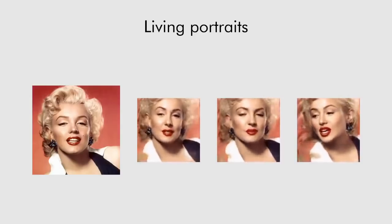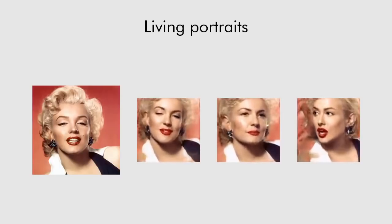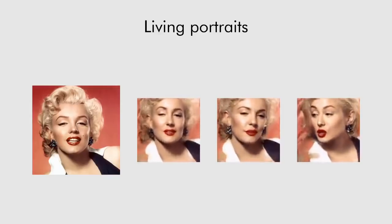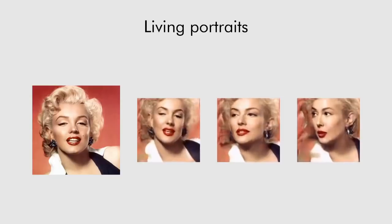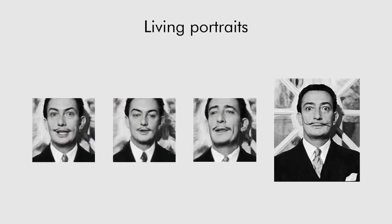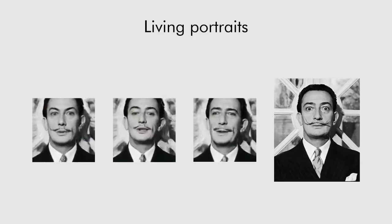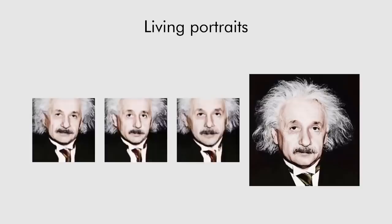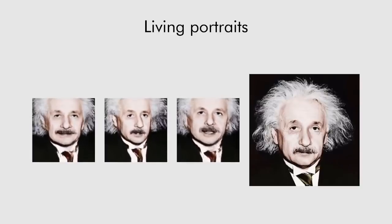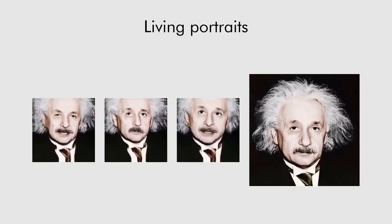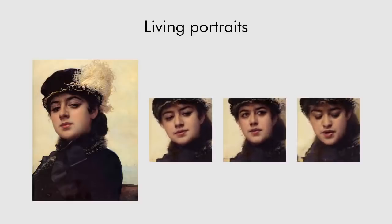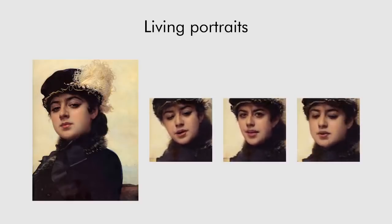We can push the generalization even further, applying the system to famous photographs. In each case, we automatically find people in the VoxCeleb2 dataset with landmarks suitable for animating a particular portrait. With a certain degree of success, we can even apply the model to paintings, despite the large domain gap between paintings and YouTube videos.